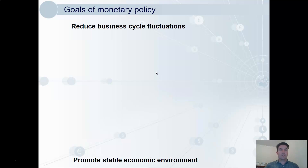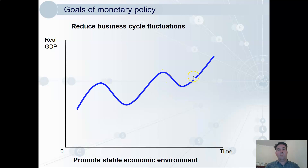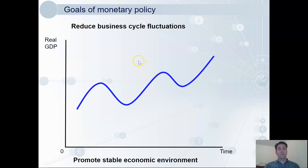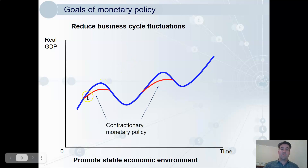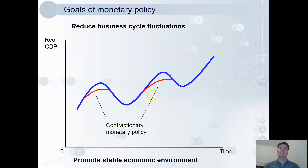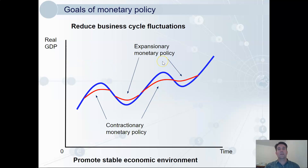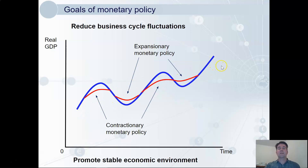With regards to reducing business cycle fluctuations and promoting a stable economic environment, we can see how monetary policy is going to do that. The fluctuations and instability reduce confidence, which can lead to these sharp falls in activity that we see in our typical business cycle diagram. If it's getting out of control and going too fast, it could be headed for a fall, so the central bank can step in with contractionary monetary policy to change the trajectory. The blue represents what it would be without any intervention, the red is with central bank intervention. Likewise, to avoid damaging recessions, they can lower the interest rate — we don't want those deep troughs. The expansionary monetary policy will stimulate economic activity, and on the whole what we're looking for is that smoother line of steadily increasing real GDP.